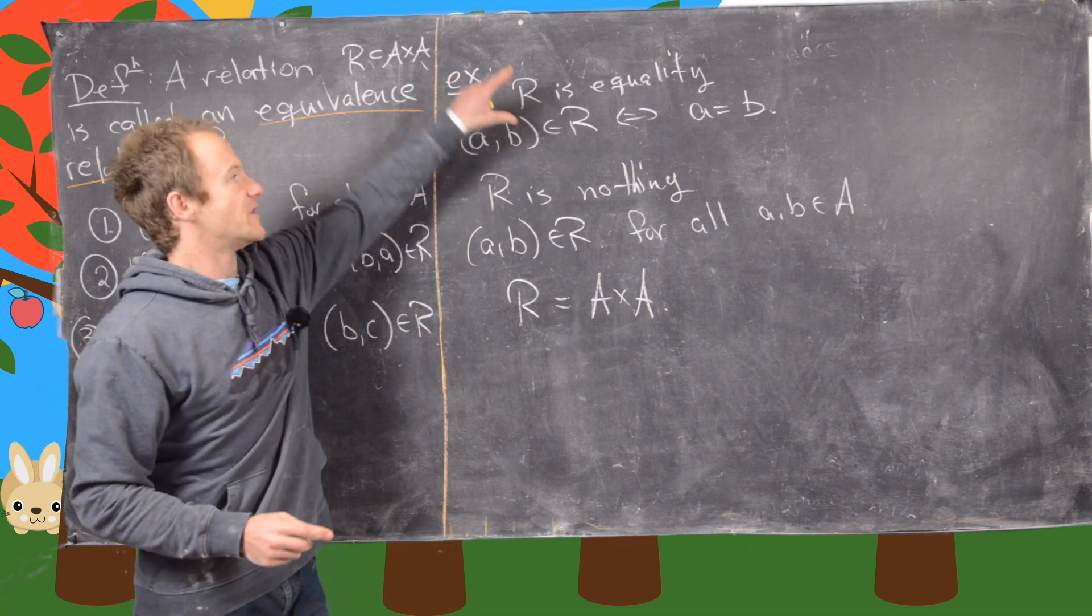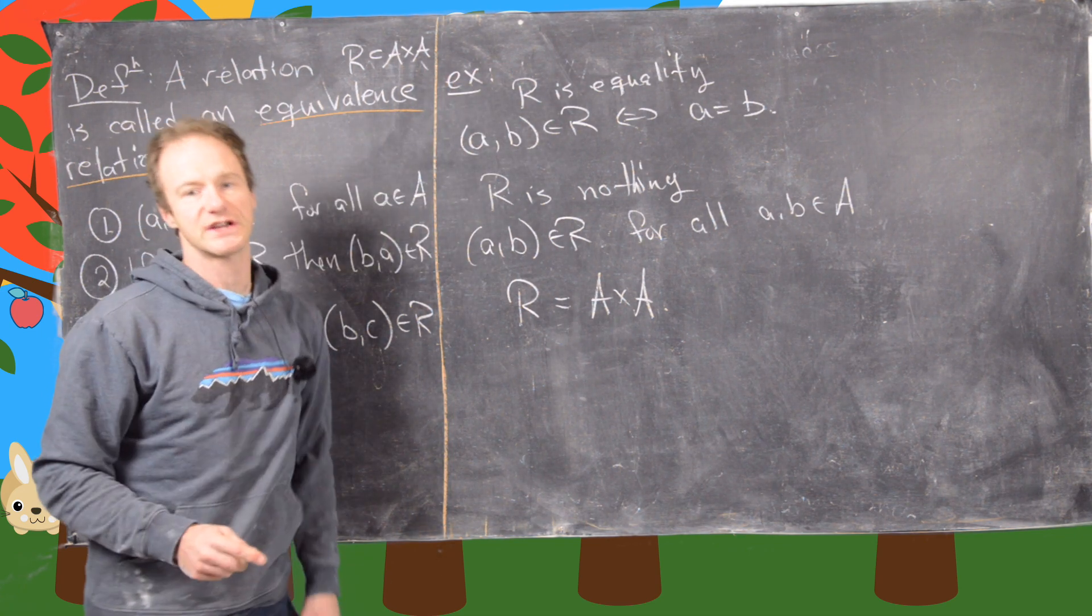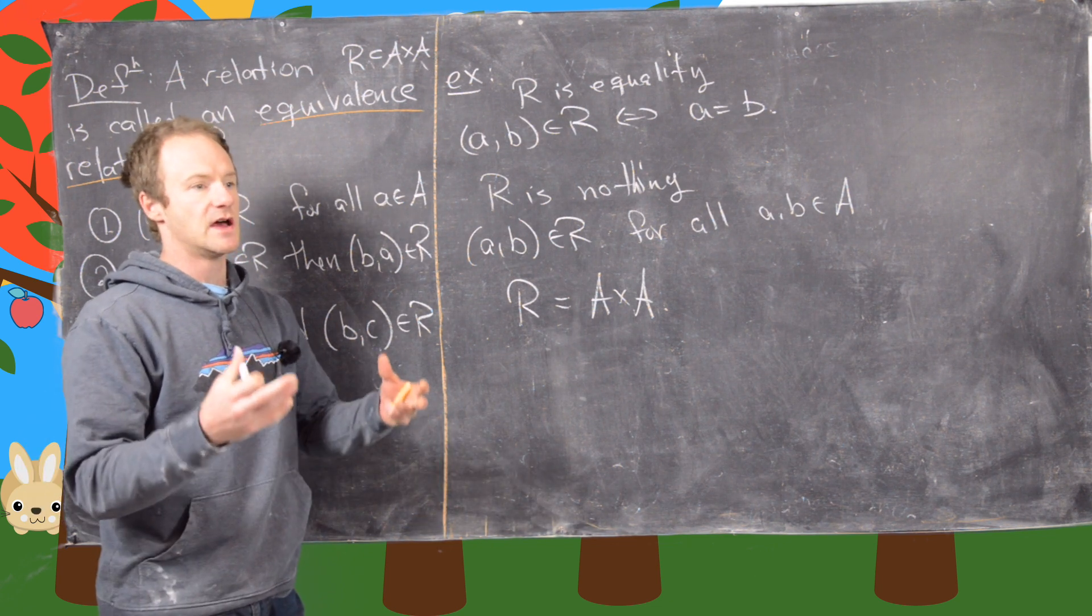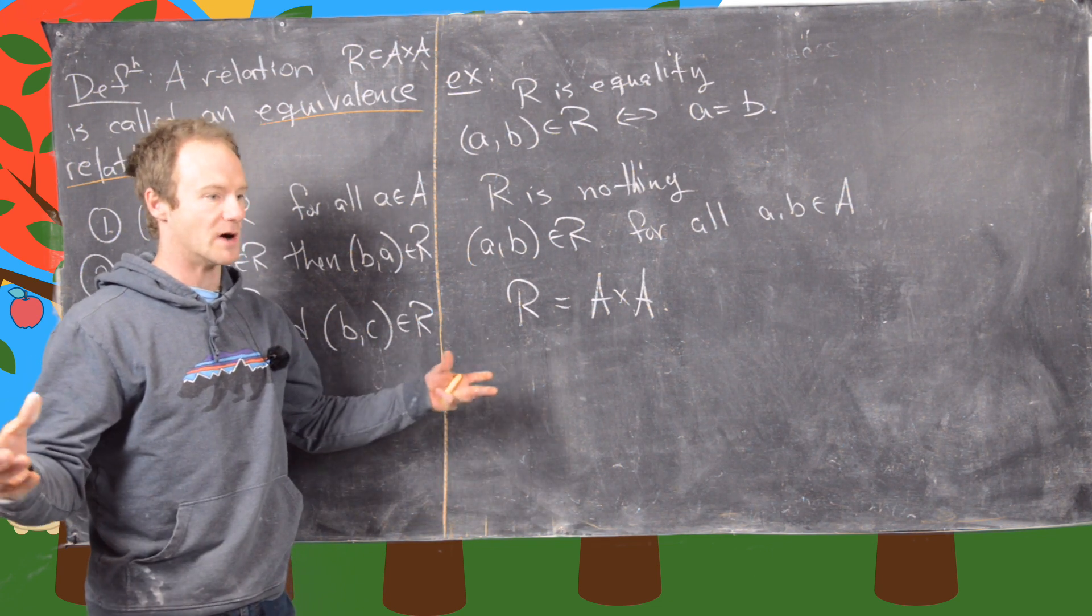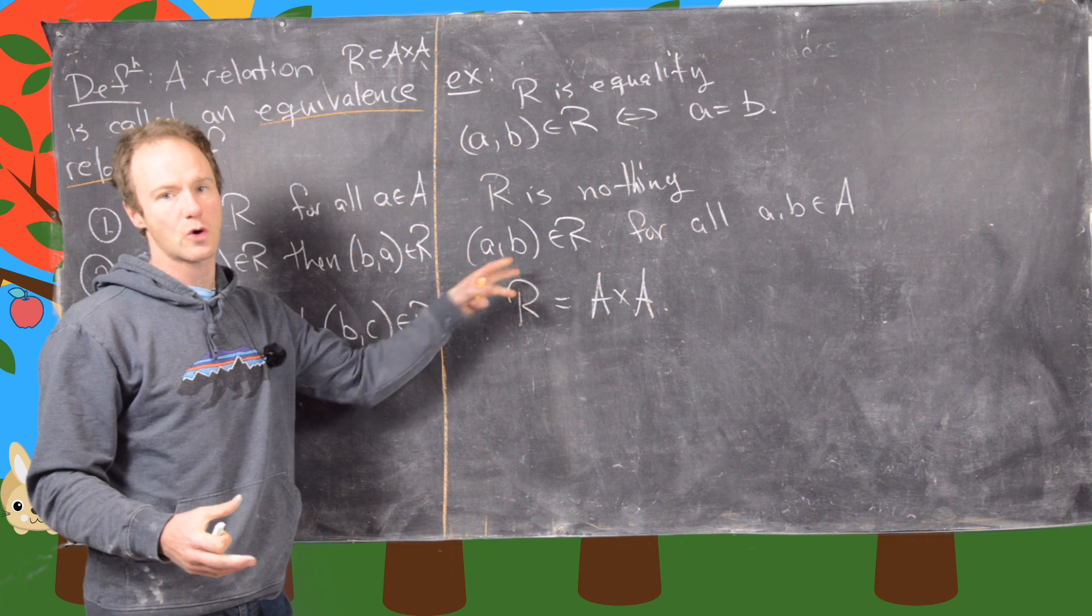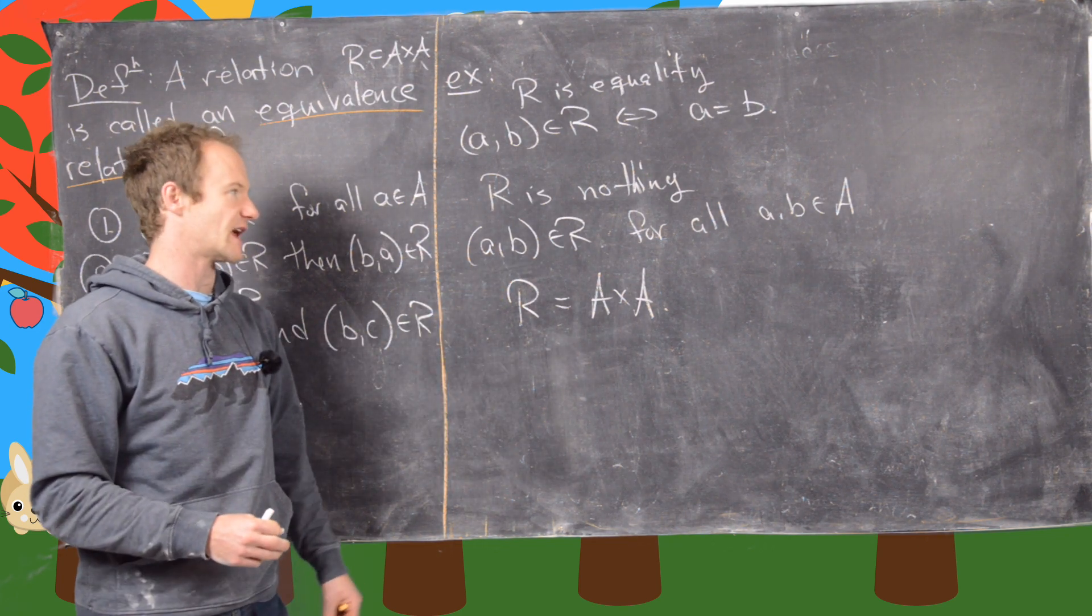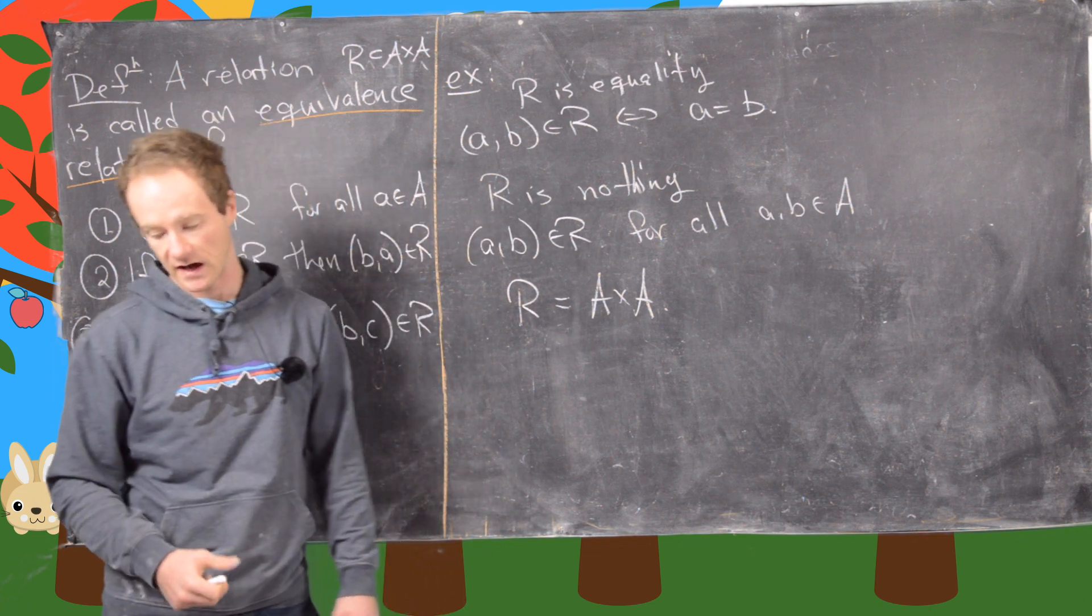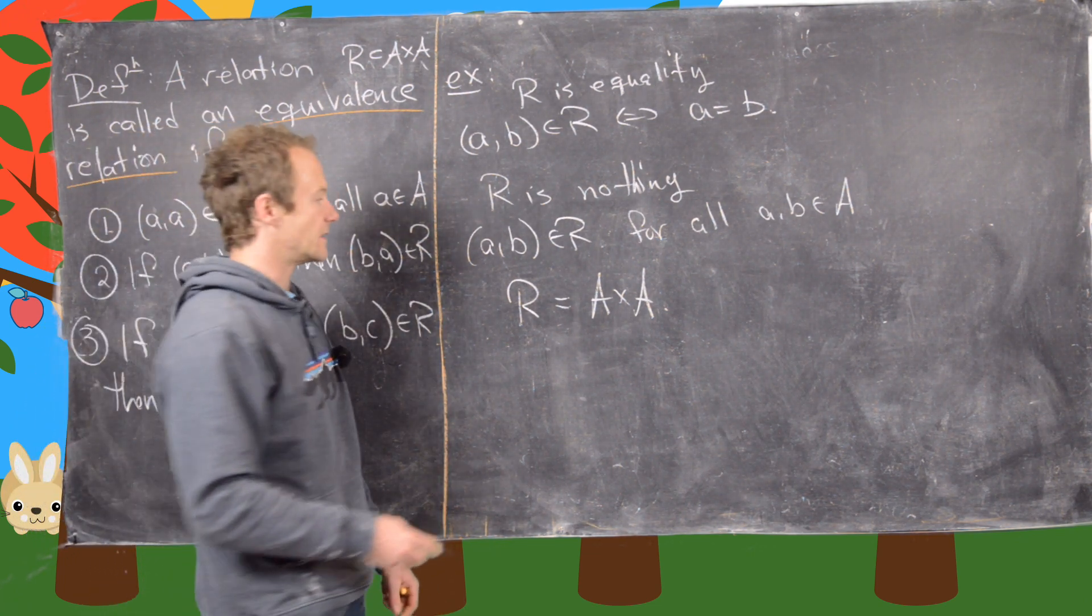But if this equality equivalence relation up here is too fine of a sieve, so it separates things out too much, then this one is too coarse. It doesn't separate the set into anything at all. Everything in the set is equivalent to everything else. Okay. Great.